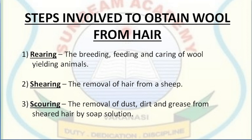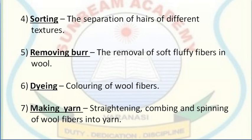After scouring, the next process is sorting, in which hairs of the animals are separated based on texture — length, shine and softness. After sorting, the next step is removing burrs, which are soft fluffy fibers in wool similar to those that appear on sweaters, and these are removed manually.